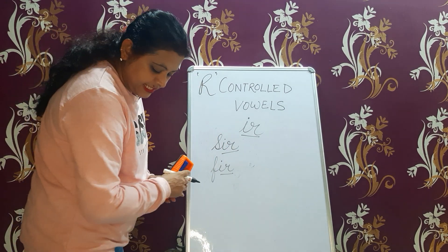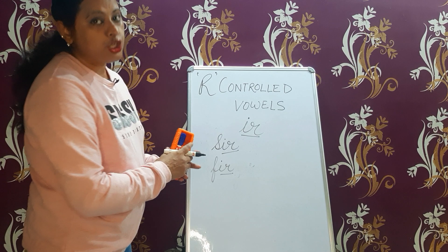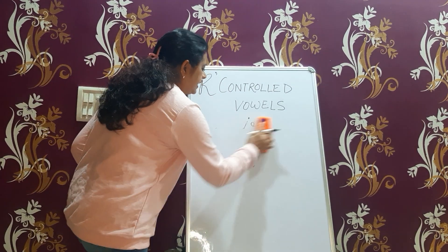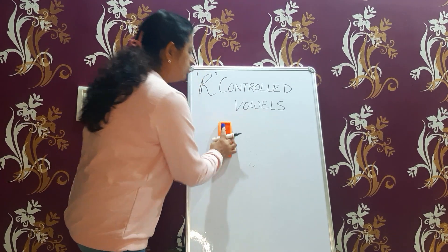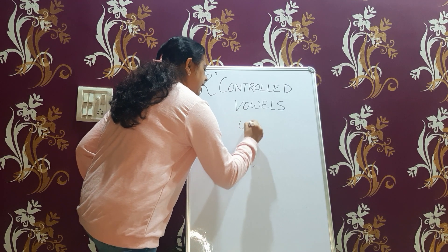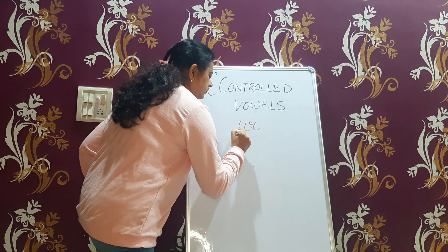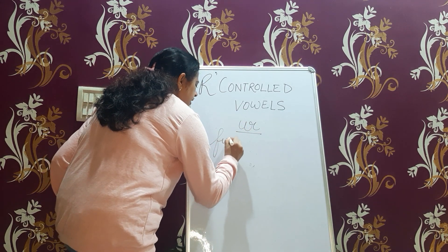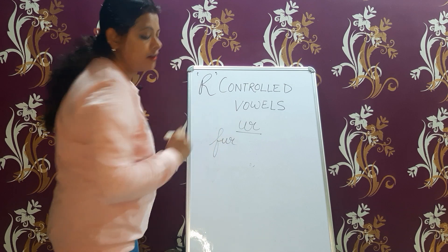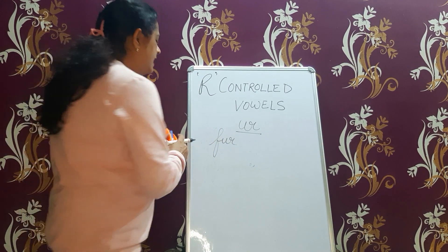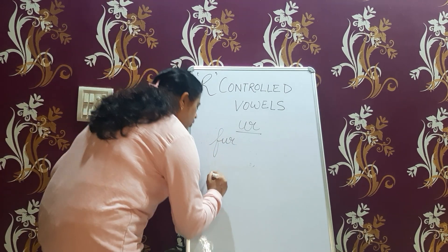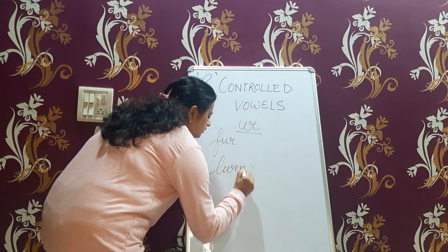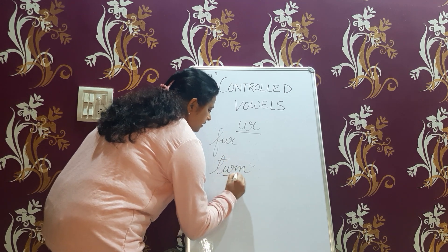Next is when U is followed by R — U-R. Example: F-U-R is pronounced as 'fur'. T-U-R-N is pronounced as 'turn'.